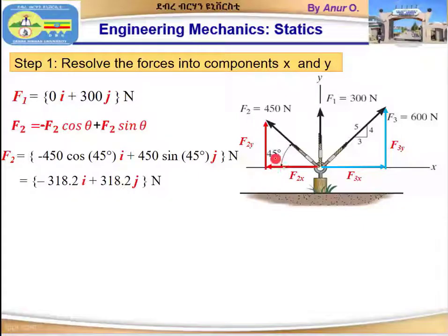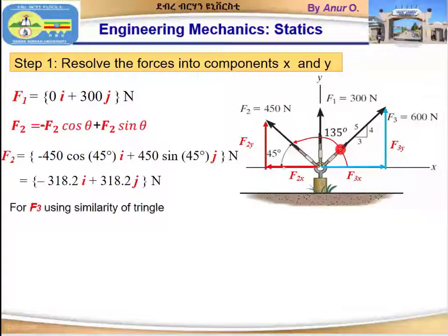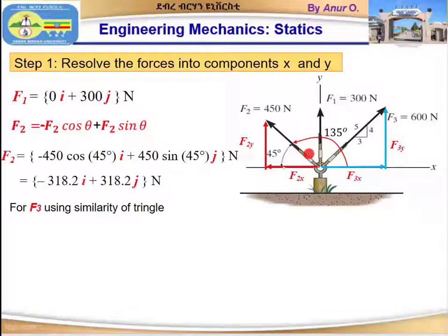Alternatively, we can measure the angle of F2 from the positive x-axis. This would be 180 − 45 = 135 degrees. If we use 135 degrees, we don't need to put a negative sign manually — simply using cos(135°) gives a negative value because in the second quadrant cosine is negative, so we get the negative value without explicitly placing a negative sign in front of F2.